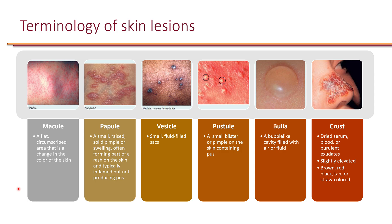Here is some terminology of skin lesions that are helpful when discussing skin and soft tissue infections. A macule is a flat circumscribed area that is a change in the color of the skin. A papule is a small raised solid pimple or swelling, often forming part of a rash on the skin, typically inflamed but not producing pus. A vesicle is a small fluid-filled sac, and a pustule is a small blister or pimple on the skin containing pus.